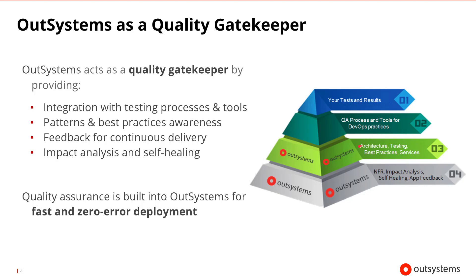Some of the features that OutSystems builds in include impact analysis and self-healing. OutSystems tracks global dependencies and pinpoints the impact of a change on all layers of the application. So even if a major change is made to the application, like in the data model or an API, nothing will break when the application is published. The self-healing capability automatically corrects problems or informs developers of any corrections they must handle.